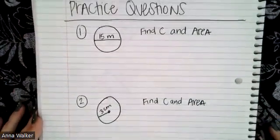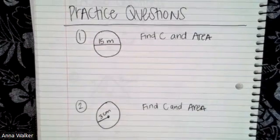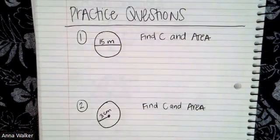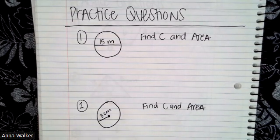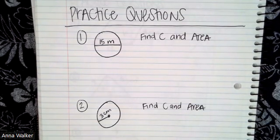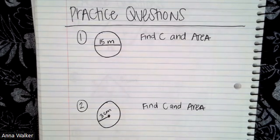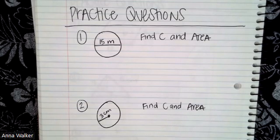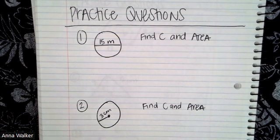I have two practice problems for you — technically four, since for each you'll find both the circumference and the area. First: a circle with a diameter of 15 meters — find the circumference and area. Second: a circle with a radius of 3 centimeters — find the circumference and area. Use 3.14 for pi unless told otherwise. Check your answers in the table of contents, ask your teacher for help, and I hope you have a great day. Thanks for watching!